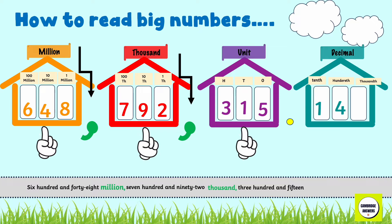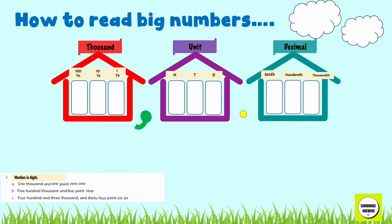Now let's read the numbers after the decimal point: point one four. The full number is six hundred and forty-eight million, seven hundred and ninety-two thousand, three hundred and fifteen point one four.